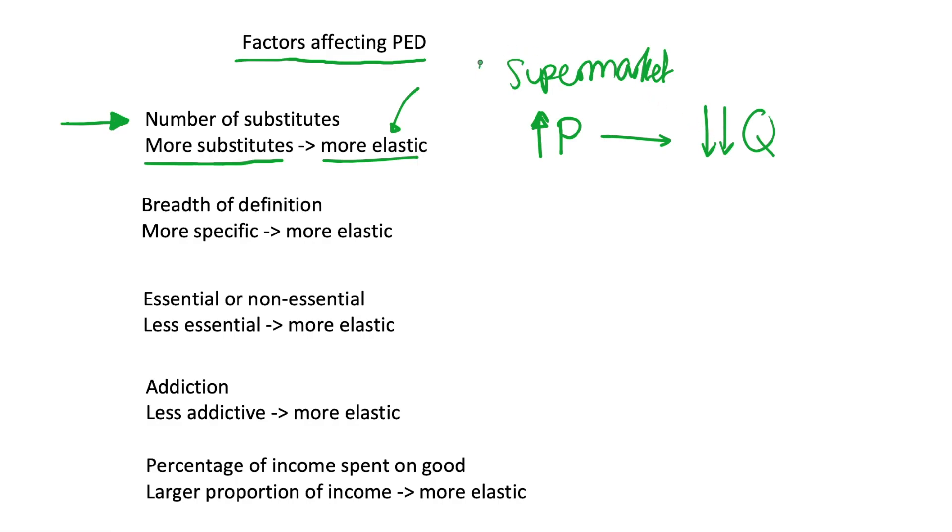The flip side of that is imagine you only have one supermarket in your area and they increase their price. Well, there's nowhere else to go. So the quantity demanded might even stay the same or it's just going to fall very slightly. So this good would be very inelastic. So the number of substitutes is a very key factor affecting our price elasticity.